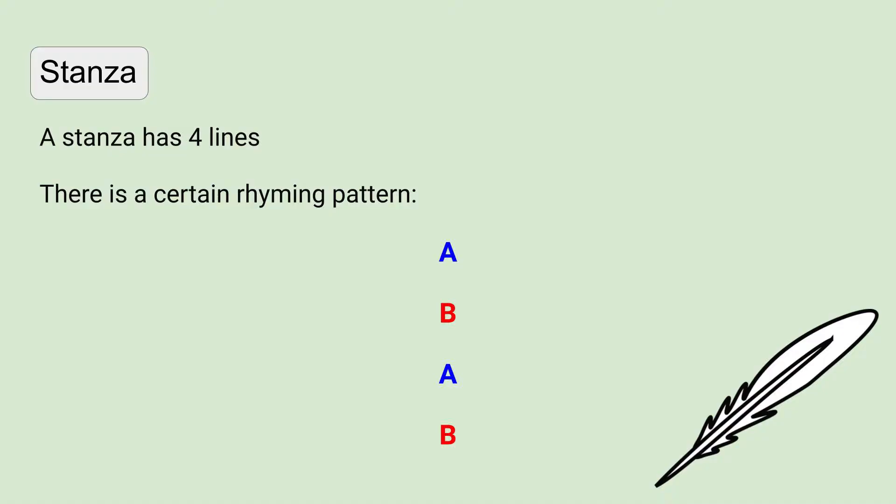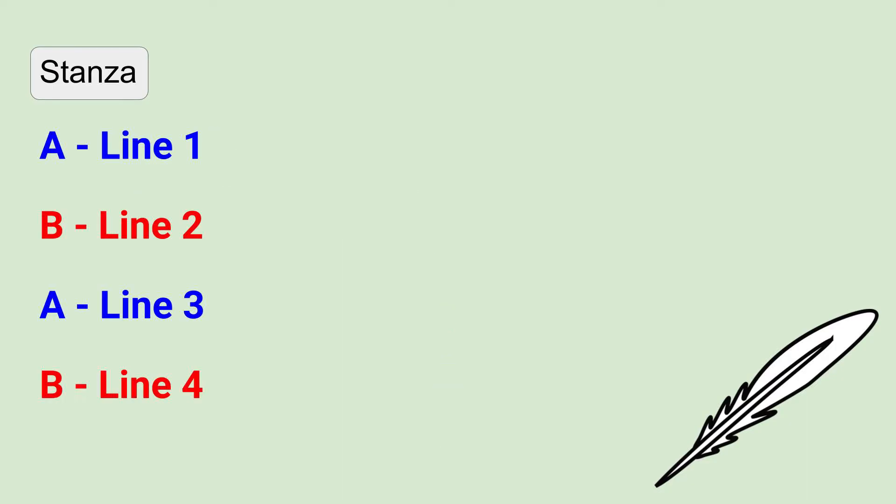Let's take a closer look at what a stanza is. Sonnets have very strict rules, so we can use examples to help us follow them. A stanza has four lines and there is a certain rhyming pattern. I've color-coded it because that really helps: A, B, A, B. The two A lines are both in blue, meaning line one and line three have to rhyme with each other. The two B lines are both in red, meaning line two and line four need to rhyme with each other.